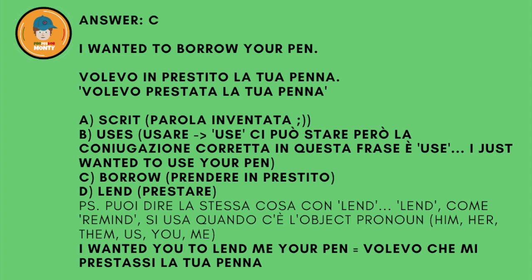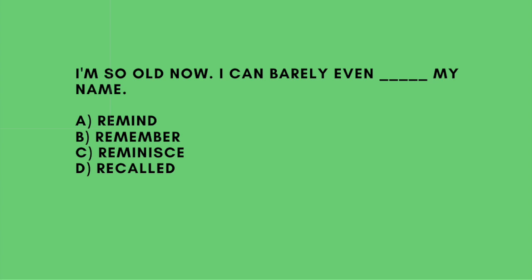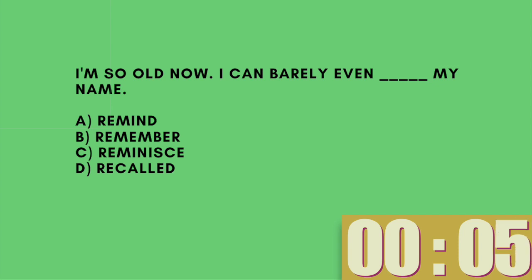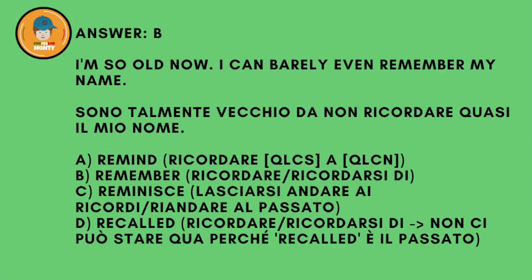Next question. I'm so old now, I can barely even mmm my name. A: remind. B: remember. C: reminisce. D: recalled. And the answer is B — I'm so old now, I can barely even remember my name — because remind means ricordare qualcosa a qualcuno, but there's no 'a qualcuno' here, so we have to use remember.